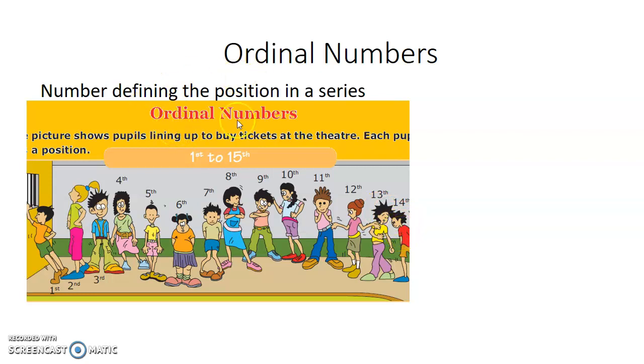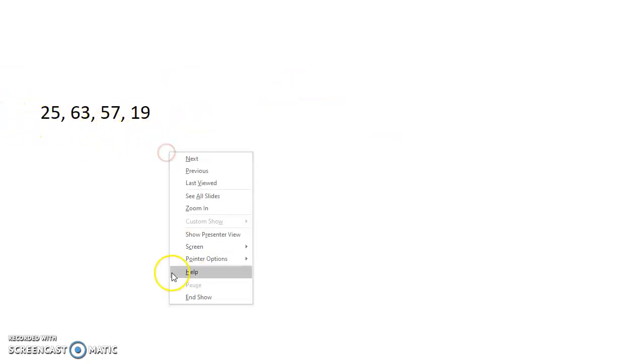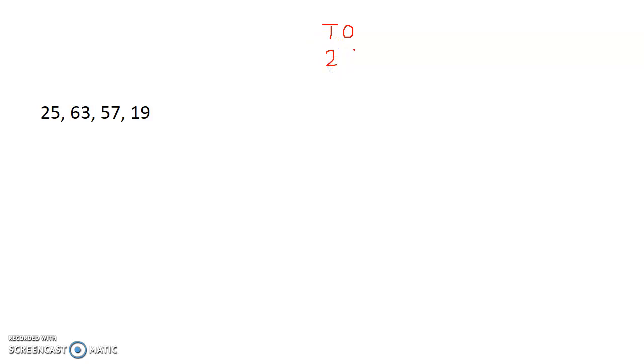So from this explanation, I hope ordinal numbers are clear to you. Now let me explain this with the help of a set of numbers. If I have to arrange them in ascending order — to arrange them in ascending order, I will write them in the place value chart. The given numbers are 25 which is 2 tens and 5 ones, 63 which is 6 tens and 3 ones, 57 which is 5 tens and 7 ones, and 19 which is 1 ten and 9 ones.